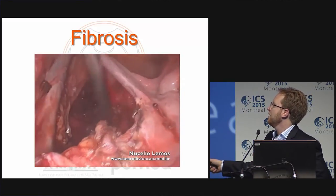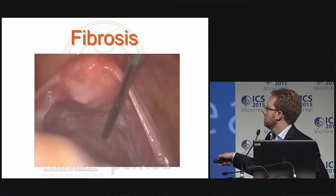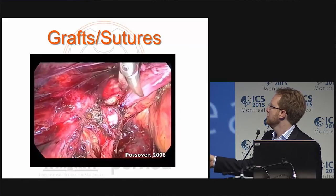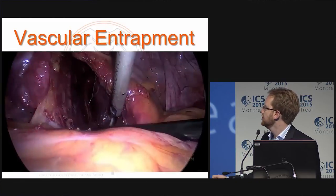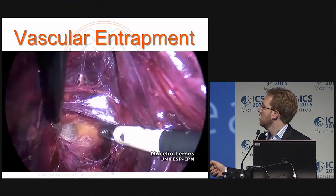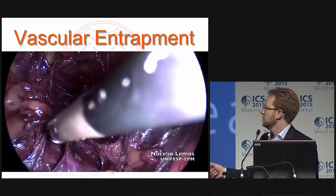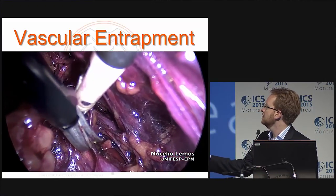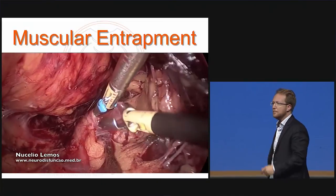Pressuring the scar shows the correlation of the sciatic nerve with the peritoneal surface. This is a McCall suture on S2 — you can see the suture here. We can also have pelvic varicosities: a dilated vein trapping the nerve roots. This is S3, and these are the pelvic splanchnic nerves on the left side.